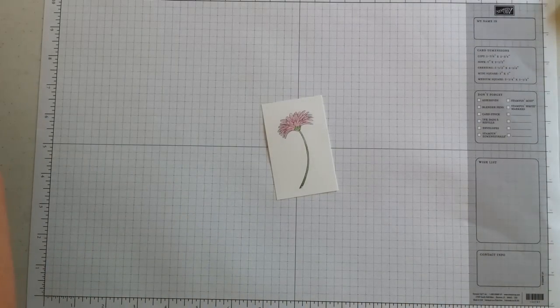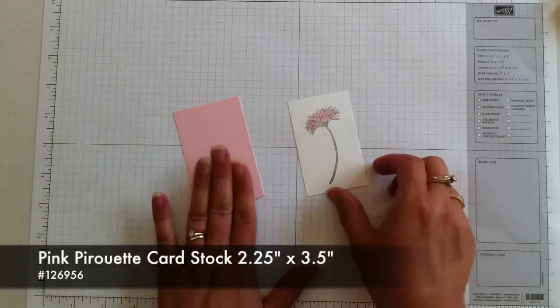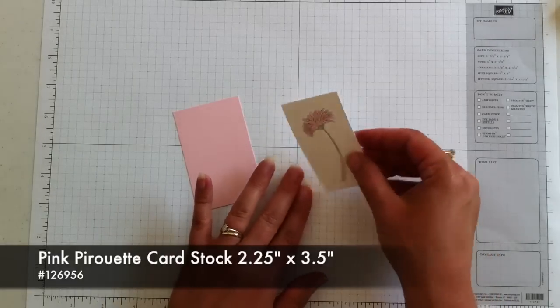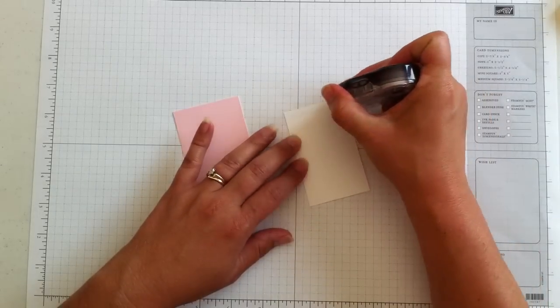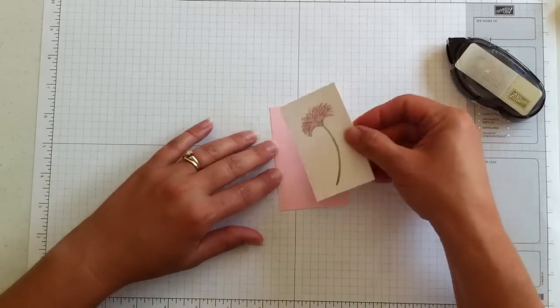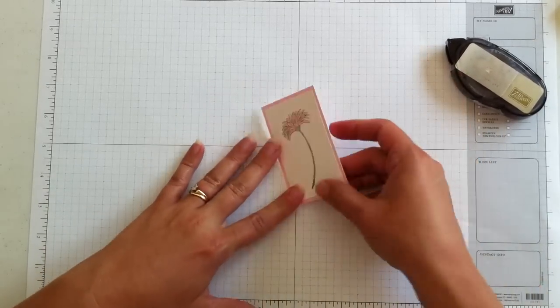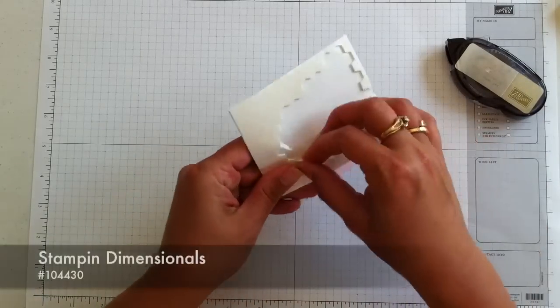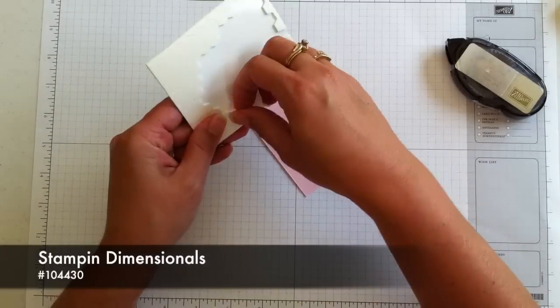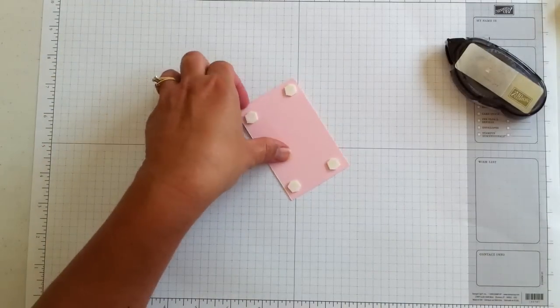So I'm going to take a piece of pink pirouette cardstock just a little bit bigger than this. The pink pirouette is 2 1⁄4 inches by 3 1⁄2. And I'm going to put some snail adhesive on the back of this layer and center it right onto this piece. This I will pop onto our actual card with Dimensional. So I'll go ahead and put those on right now and peel them off in just a moment.